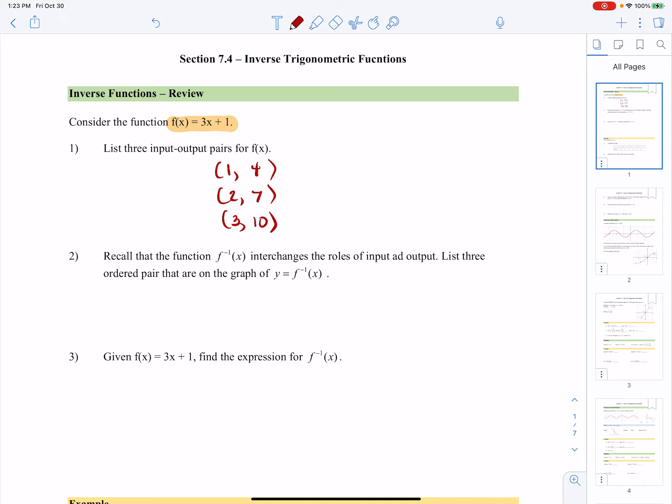So there are three of many input-output pairs for this function. And we know that when we graph the function, we're going to get something like this. It's going to be a line with y-intercept 1 and slope 3.